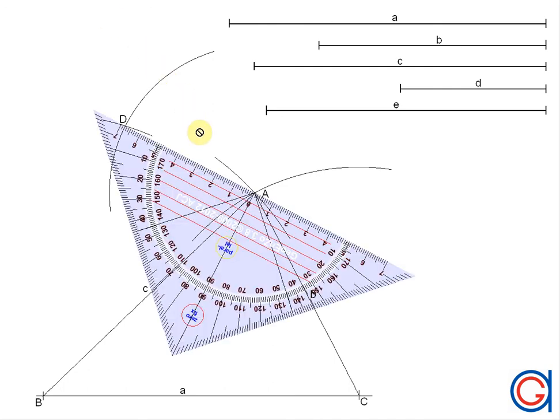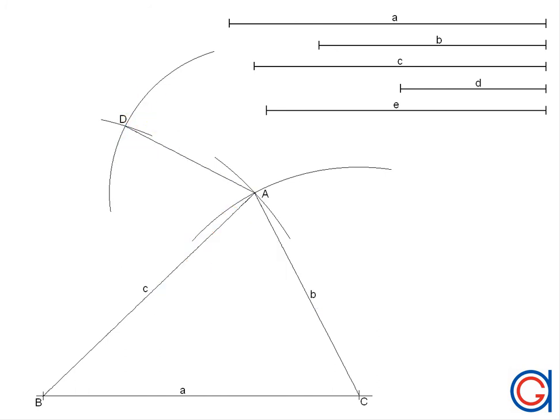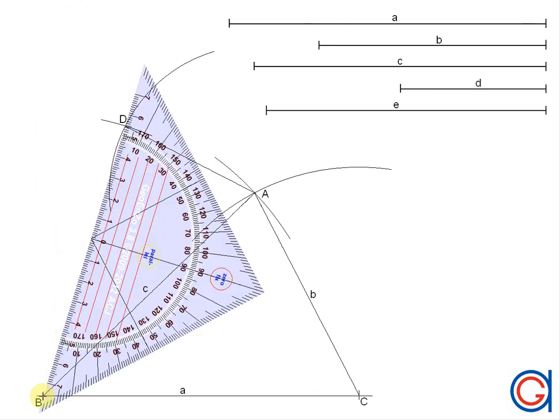There you can see our last vertex D. And the next step is to join vertex D with vertices A and B. Finally, we join vertex B to vertex D.